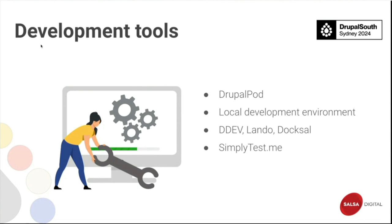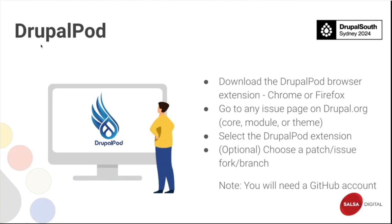Other local development options include MAMP, WAMP, LAMP, and DDEV — which is very widely used. There's also Lando and Docksal. And there's a site called SimplyTestMe where you specify a Drupal version and module and it builds the install for you in the cloud.